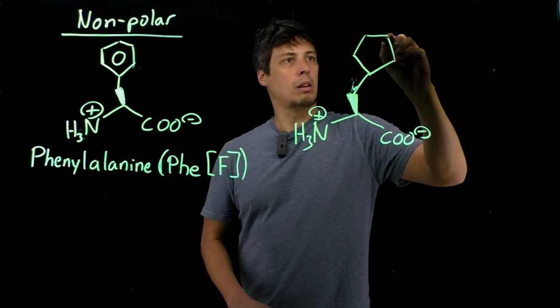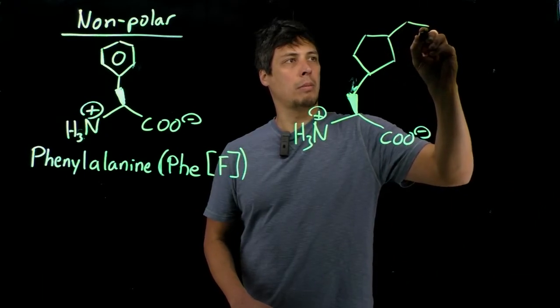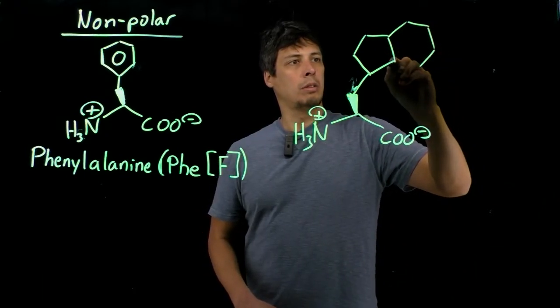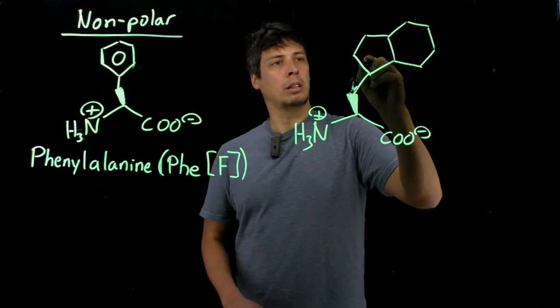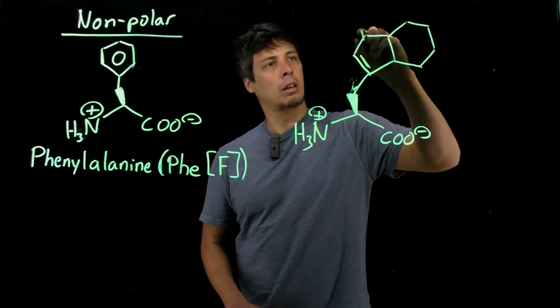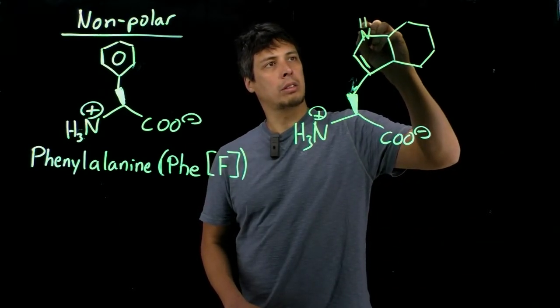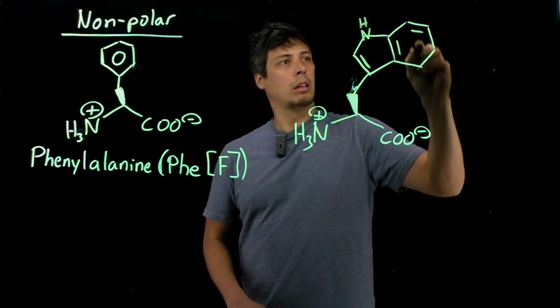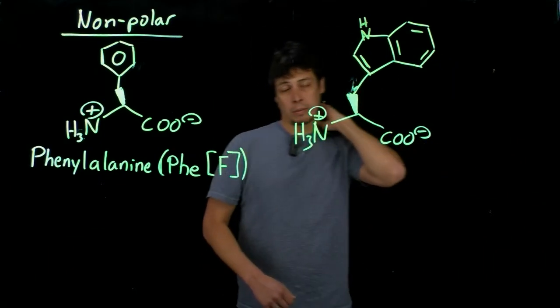So, draw a five-membered ring, fused to a six-membered ring, okay, a double bond right here, NH up here, and then it looks like a benzene basically.